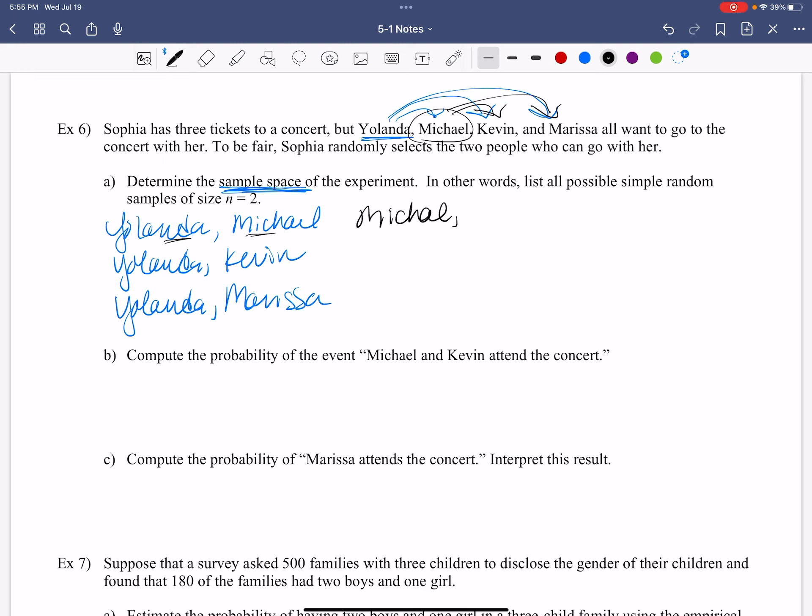So Michael gets paired with Kevin, and Michael, oh, I forgot the L on Michael, gets paired with Marissa. All right. Then Kevin here has already been paired with Yolanda. Kevin has already been paired with Michael, so then we just want to move forward. Kevin gets paired with Marissa.